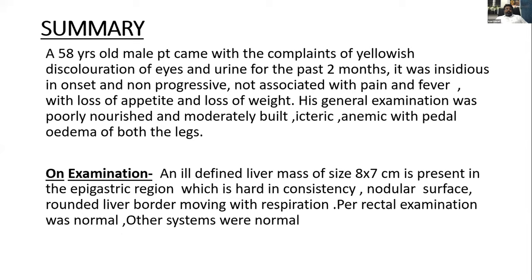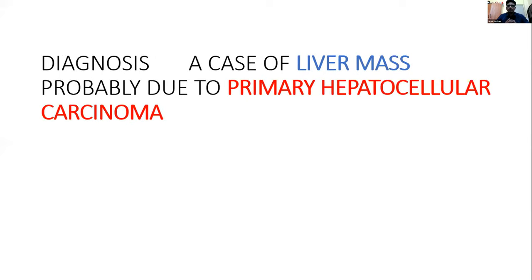Summary: a 58-year-old male, known diabetic and hypertensive for the past two years, presenting with yellowish discoloration of the eyes for the past two months — insidious onset, non-progressive, not associated with pain or fever, with significant loss of weight and appetite. Examination: poorly nourished, moderately built, icteric, anemic, with bilateral pitting pedal edema. Ill-defined liver mass of 8×7 cm in the epigastric region — hard consistency, nodular surface, rounded liver border, moves with respiration. Probable diagnosis: primary hepatocellular carcinoma.